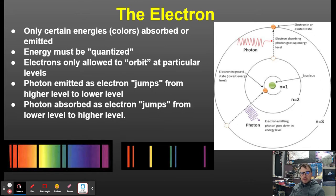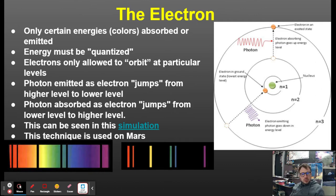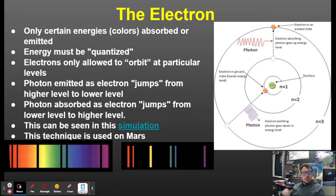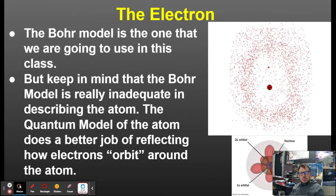Only certain elements can absorb certain amounts of light. This technique is used in space by the Mars rovers to look at rocks and determine what they're made of — by seeing what electrons are present when they jump certain energy levels. The Bohr model is the one we use most, but keep in mind it is really inadequate when describing the atom.